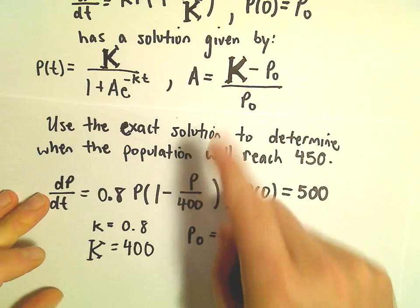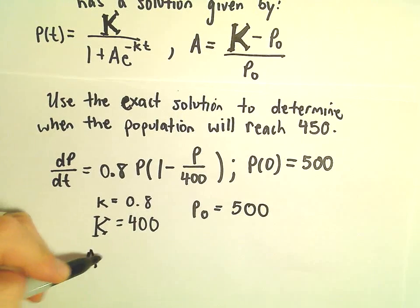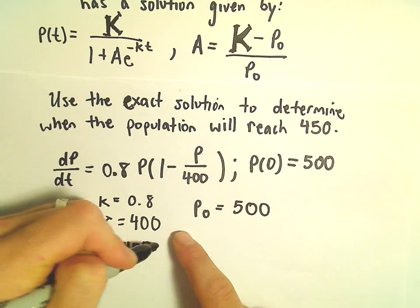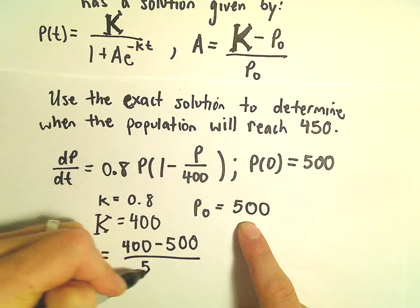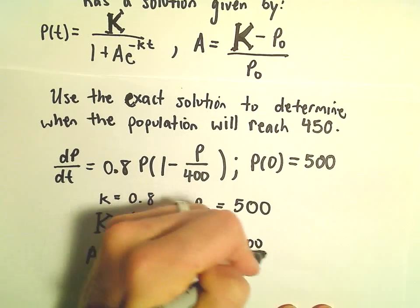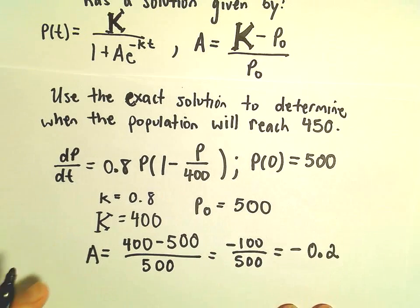And now it's just a matter of kind of filling in all these formulas. Our A value is going to be capital K, which is 400, minus the initial population, divided by the initial population. That's going to be negative 100 over 500, or negative 1 fifth, or negative 0.2.